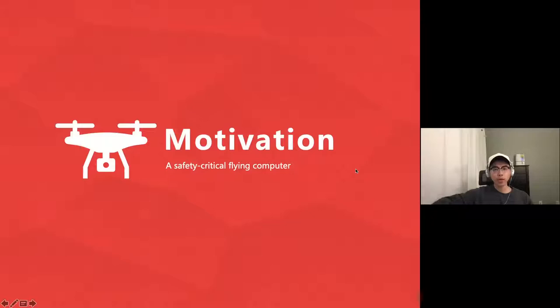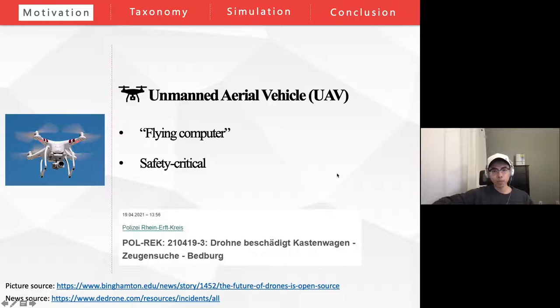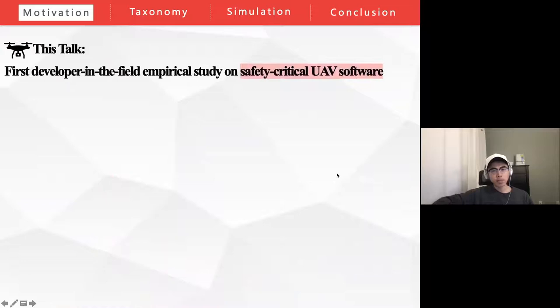Our story starts with this safety critical flying computer. UAVs, which are usually referred to as drones, are called a flying computer system, as its software stack has been significantly enriched nowadays. We should attach great importance to the safety criticality of UAVs, considering that any crash of the UAV is not only a computer safety problem, but also a public safety hazard. Our study is the first empirical study in the field on the safety critical components of UAV software in a real-world code base, based on bonding functions.